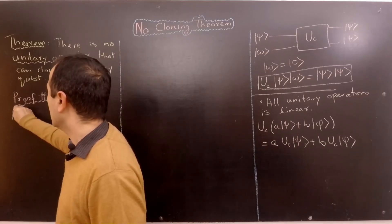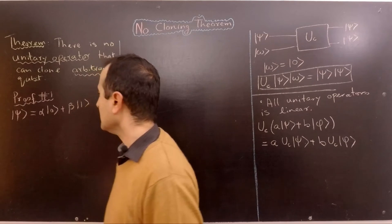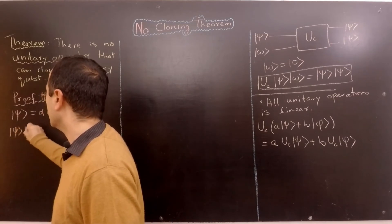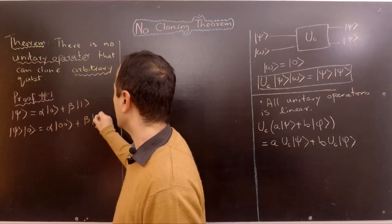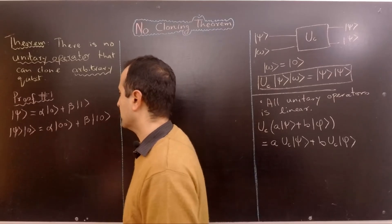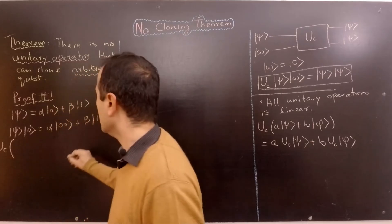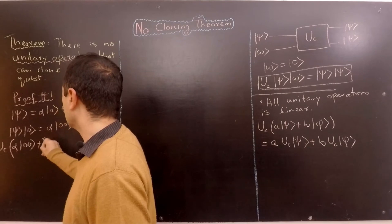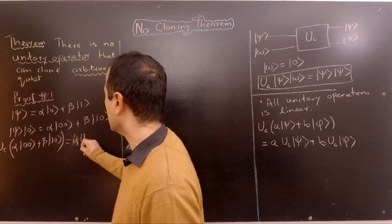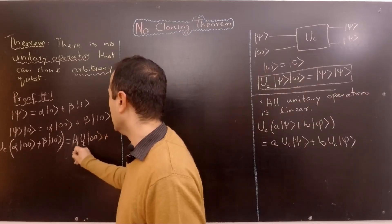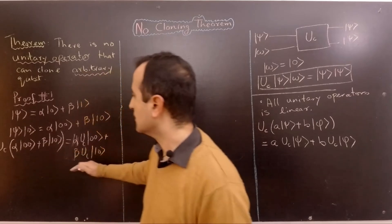Let's say that |ψ⟩ is an arbitrary qubit equal to α|0⟩ + β|1⟩. Then |ψ⟩ ⊗ |0⟩ will equal (α|0⟩ + β|1⟩)|0⟩, and that is the input to our circuit. In the first proof, we have to show that if we apply UC on the whole input — that is, UC(α|0⟩ + β|1⟩)|0⟩ — the left-hand side and the right-hand side must produce the same answer. Otherwise, our cloning operator is not linear.